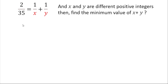Welcome back. Today we are going to solve this interesting algebraic problem. The given problem is 2/35 = 1/x + 1/y, where x and y are different positive integers. Find the minimum value of x plus y. The condition that x and y are different positive integers means x is not equal to y, and both are positive integers.